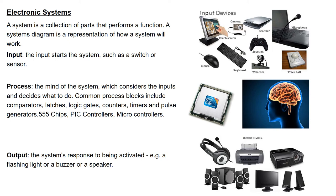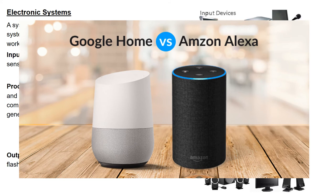The same applies to your TV — the TV input might be the remote control, the processor is the brain inside the TV, and the output is both the sound and the video. Smart devices like Alexa and Google Home do input, process, and output all in one. The input is you talking to it; the processor is built inside. The output could be the speaker, or it could control lights in your house or turn your heating on and off — those are output signals these devices can send.